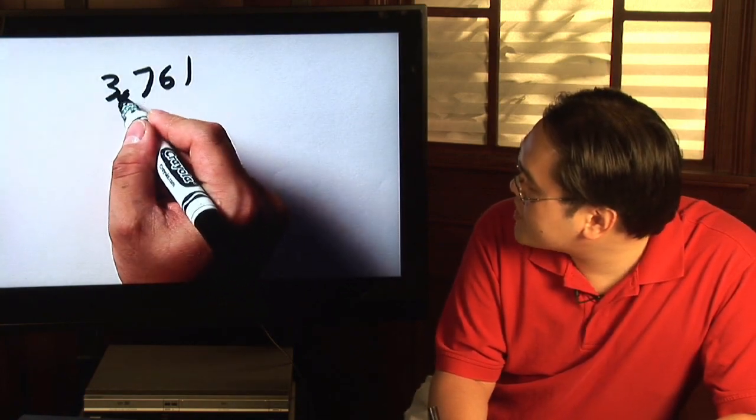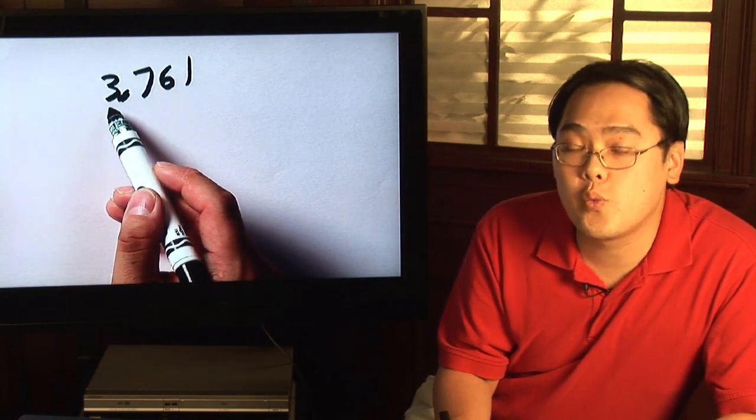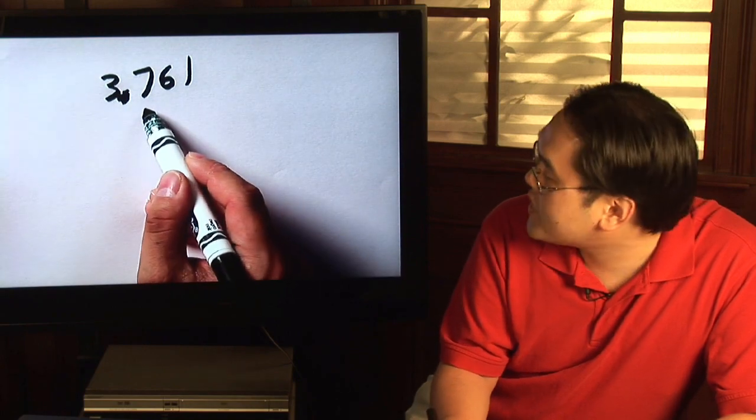Suppose you have 3.761. Now we know three is the whole number, three is the ones place here, but what we're going to be focusing on is what's afterwards.